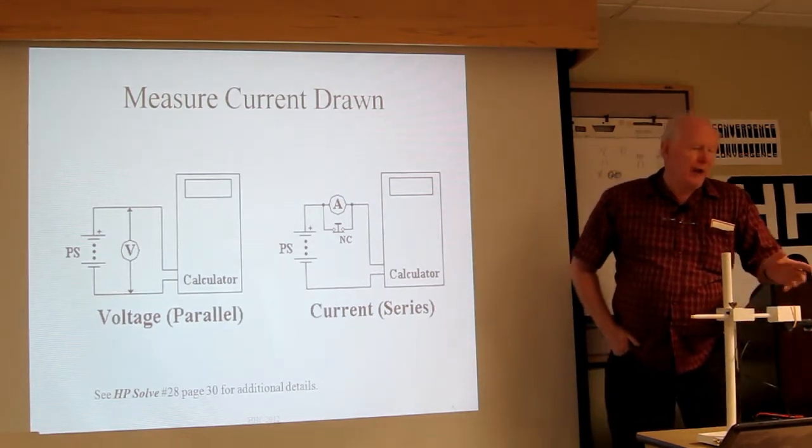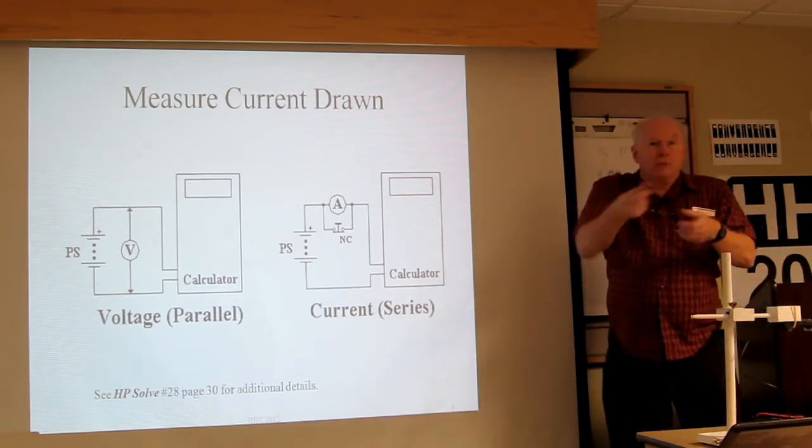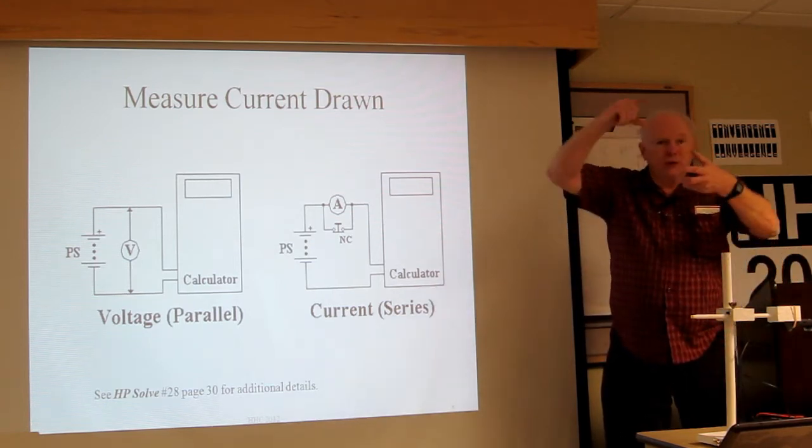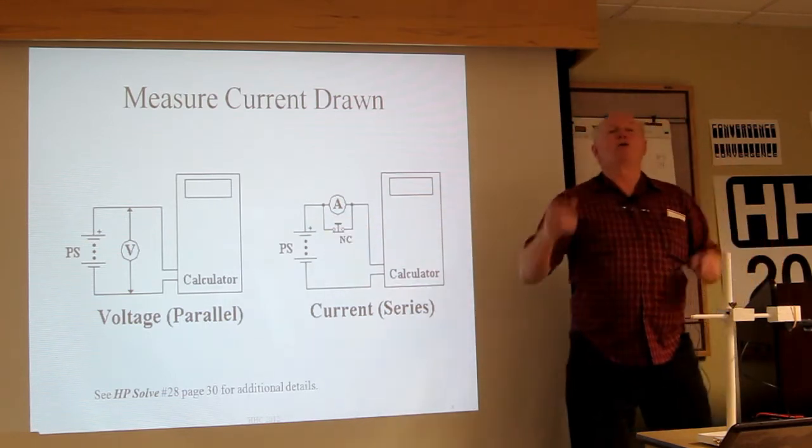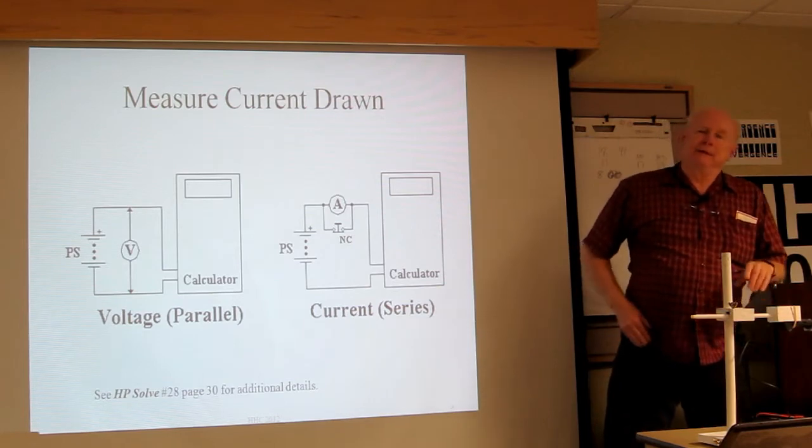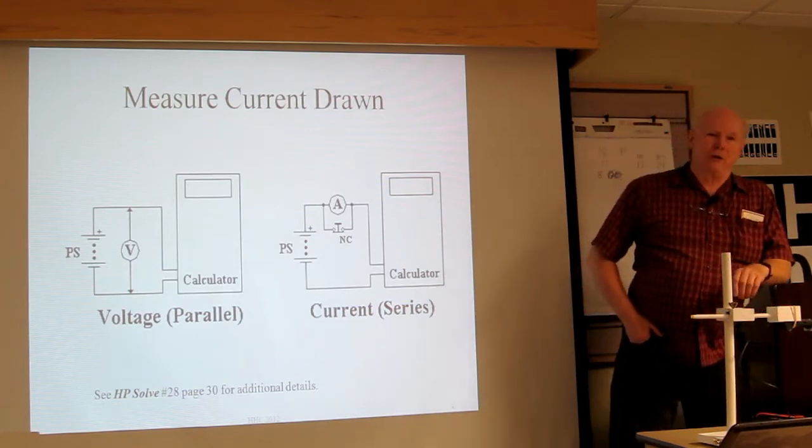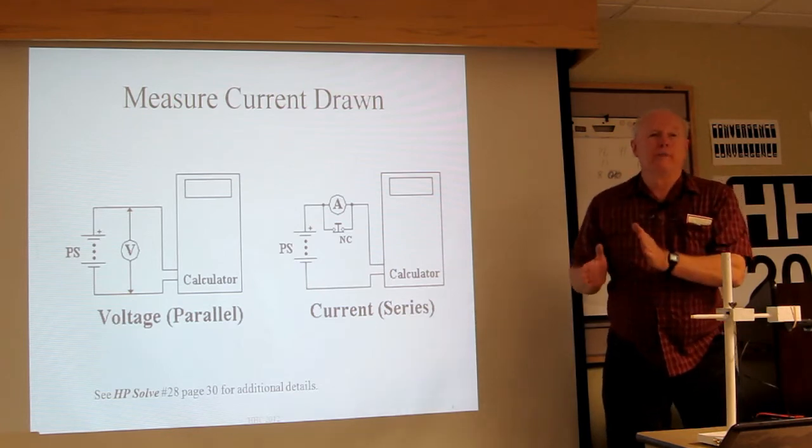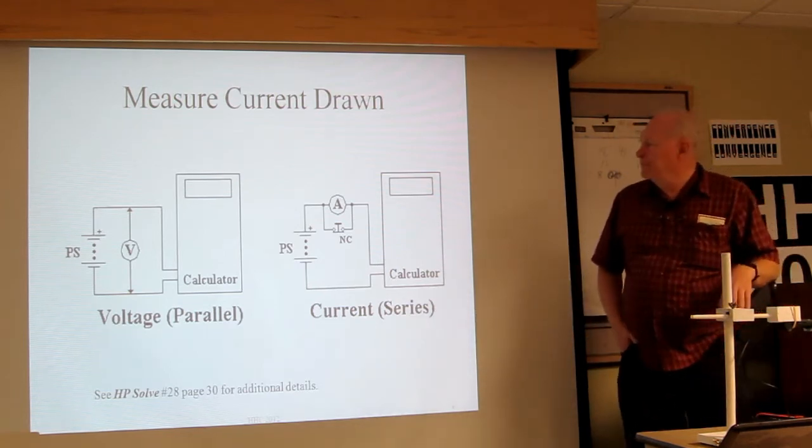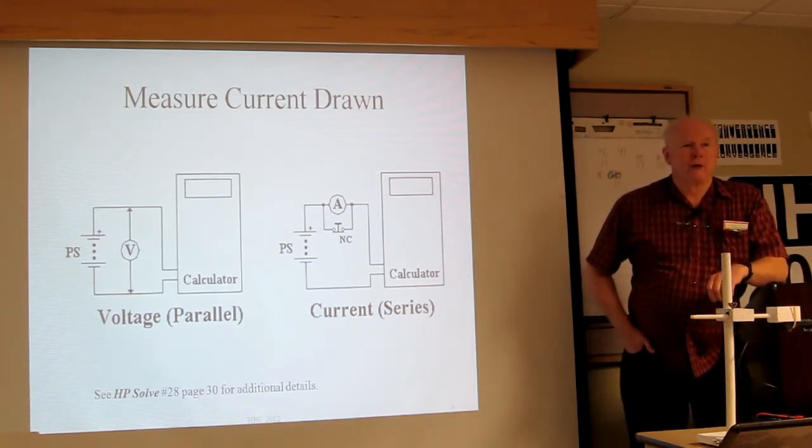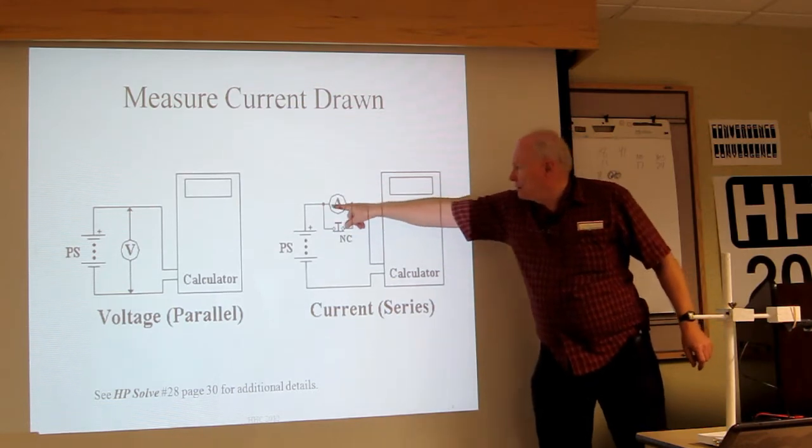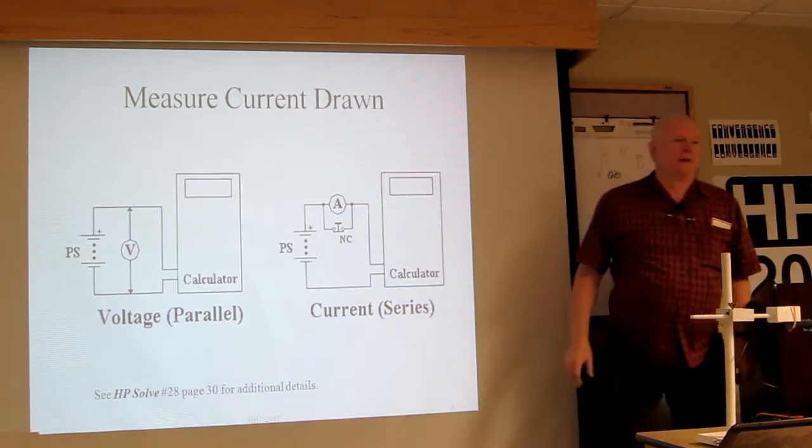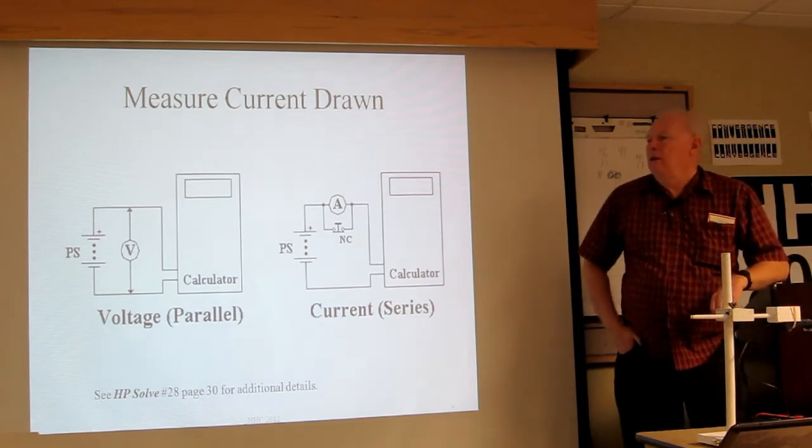If we're going to make measures, we all know that a meter has probes. Voltage is the most common measurement you make. You pick a range that will be six or above. You put the plus to the plus, the minus to the minus. But if you're going to measure the current, you have to break the circuit and put the meter in line to measure the current going through the calculator. That's where life becomes more difficult.